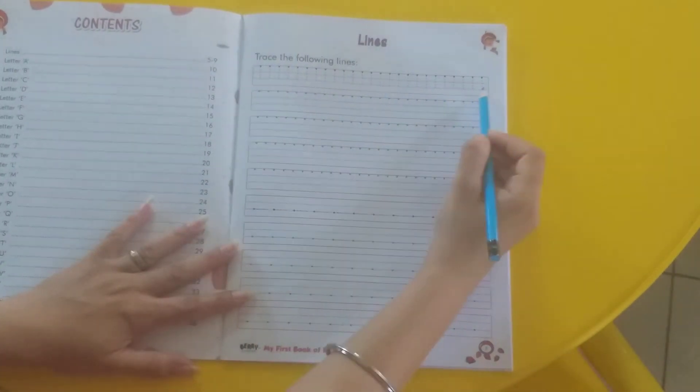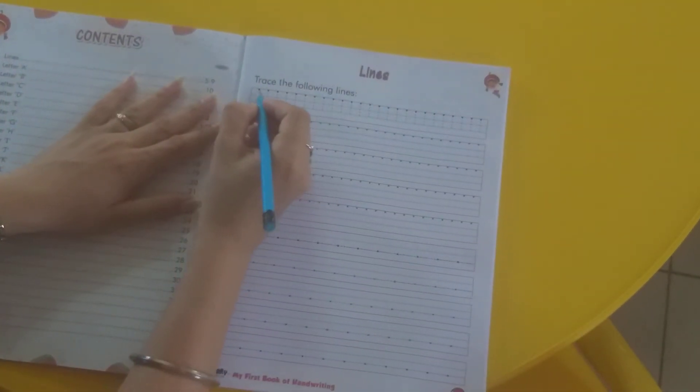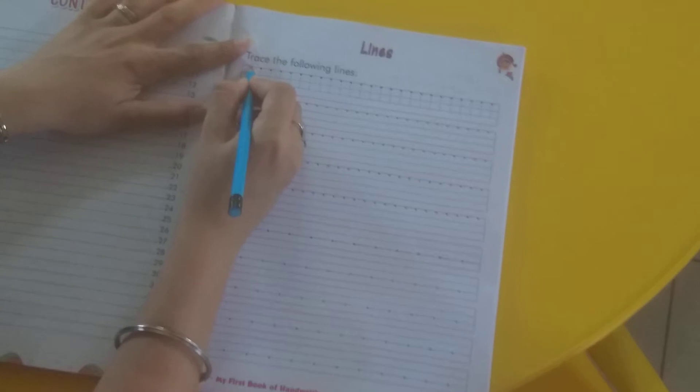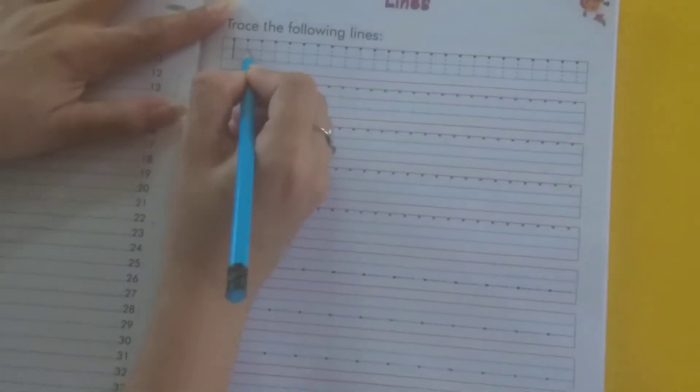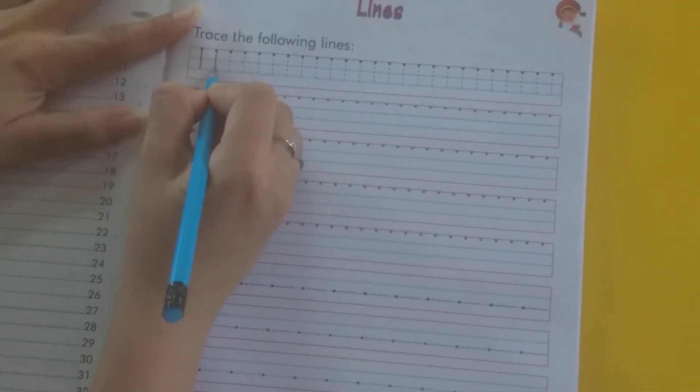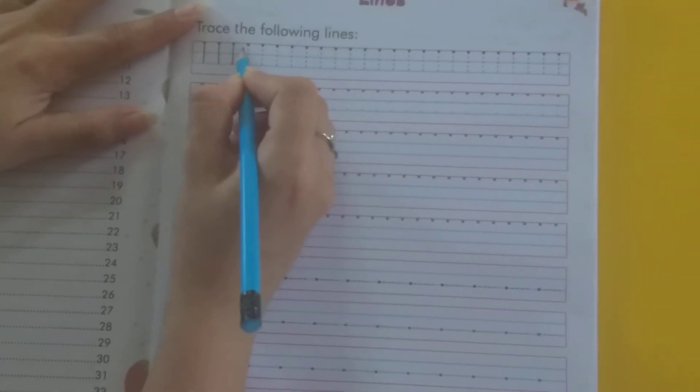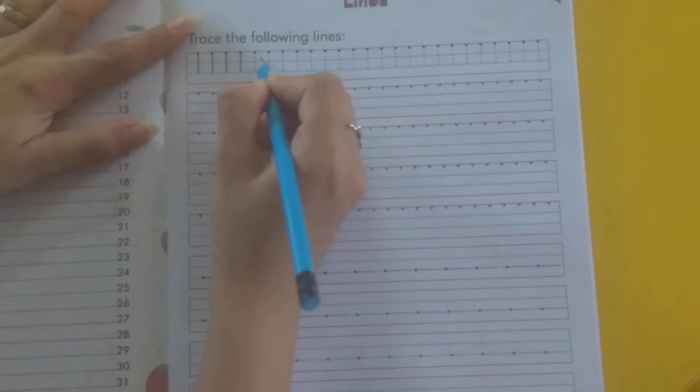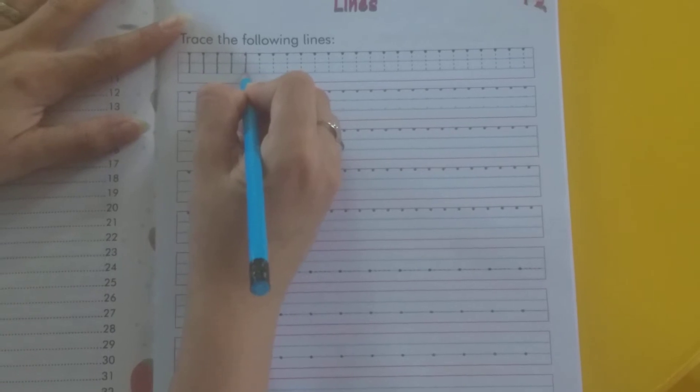Konsi lines hai? Standing lines, right? Hum isko trace kareenge. Iske oopar hi hum tracing kareenge. Standing lines. Isko hum khari lines bhi bol sakte hai. Standing lines matlab joh lines khari hai.